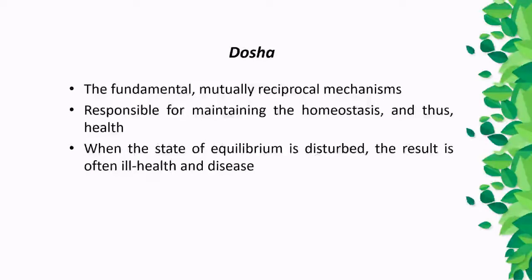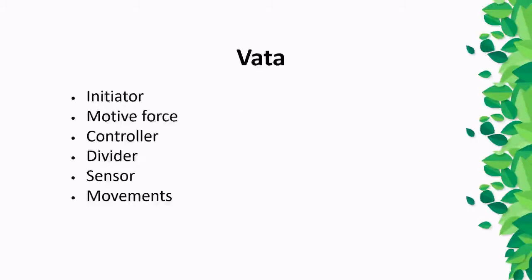Dosha is a term that indicates fundamental, mutually reciprocal mechanisms responsible for maintaining homeostasis and thus health. When the state of equilibrium is disturbed, the result is often ill-health and disease. The three doshas have been ascribed specific functions in the body. For instance, Vata is the initiator, the motive force, the major controlling mechanism, responsible for divisions, sensory perceptions, and movements.